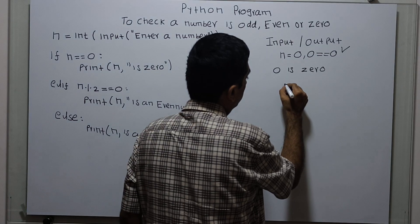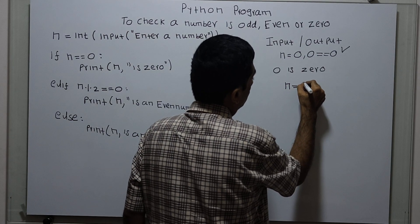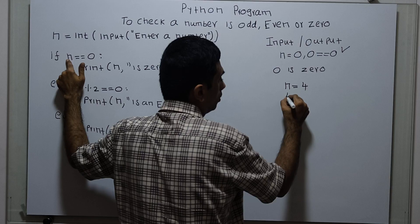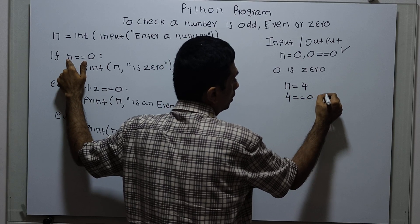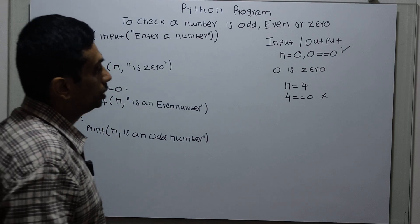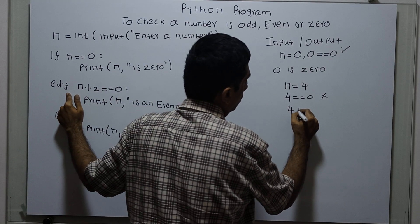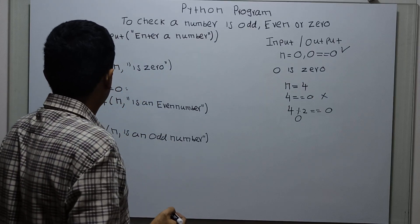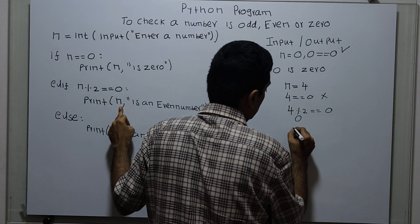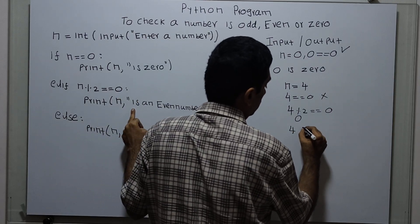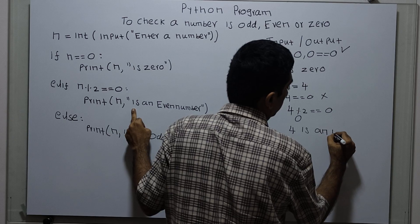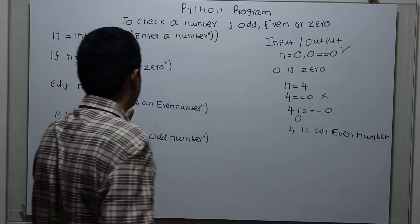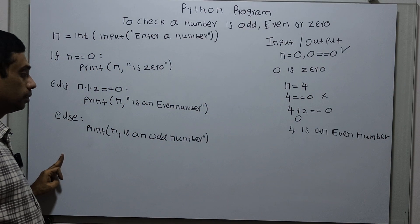I am executing the program again. Now I am giving n = 4. First we check 4 == 0 — this is false. Then we check 4 % 2 == 0: 4 modulo 2 equals 0, and 0 == 0 is true. So I print: 4 is an even number. Then control will come out of the entire structure.